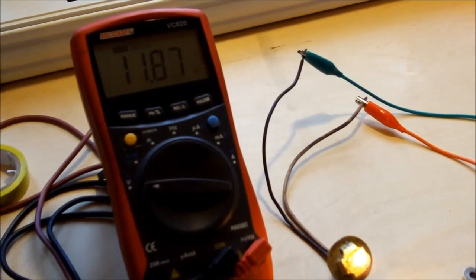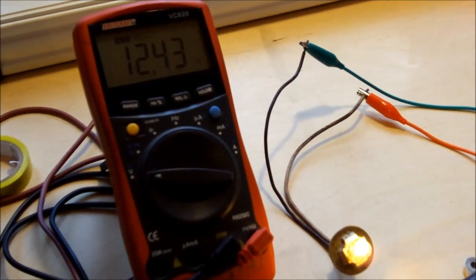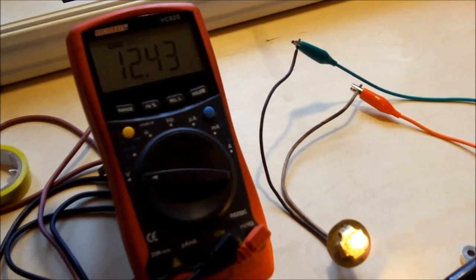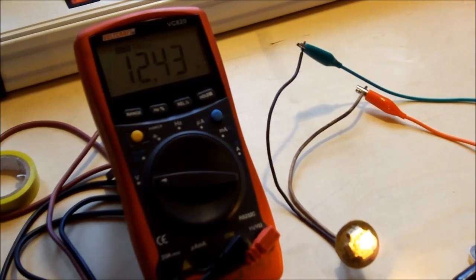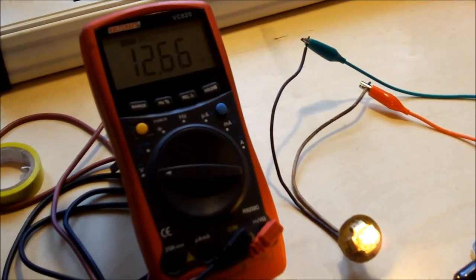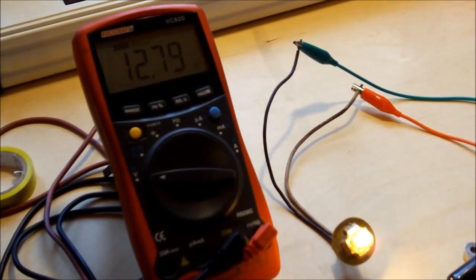10 volt, 12 volt. Now we have 12.5 volts and the bulb is still glowing. Now I'm going to increase the voltage and this regulator should cut off at approximately 14 to 14.4 volts.